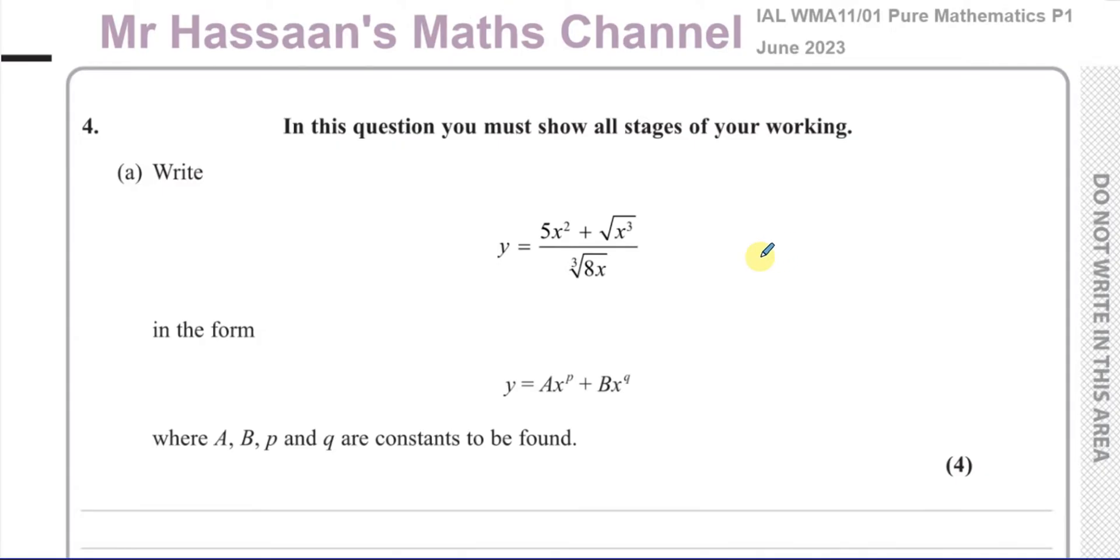This question part A is about this expression in surd and index form which we have to rewrite in the form y equals ax to the power of p plus bx to the power of q, where a, b, p and q are constants to be found. So basically we have to take this algebraic expression which is written as one single fraction and split it up into two terms with the x's in the numerator in index form.